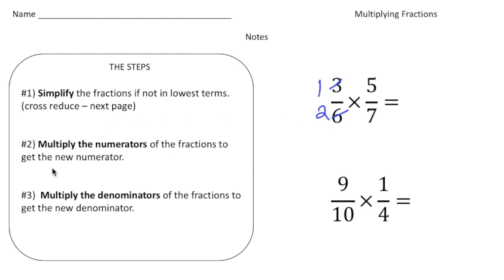Now step number two, you multiply the numerators. Our numerators are 1 and 5, so 1 times 5 gives us 5. Step number three, we multiply the denominators. Our denominators are now 2 and 7, so 2 times 7 is 14. And that's it. That's your answer.